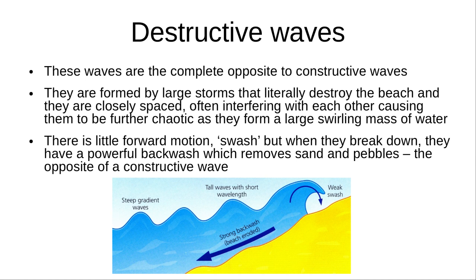Destructive waves are the exact opposite. These are formed by large storms that literally destroy the beach. They are closely spaced and often interfere with each other, which causes them to be further chaotic as they form a large swirling mass of water. There is little forward motion — swash — but when they break down, they have a powerful backwash which removes sand and pebbles, the opposite of a constructive wave.